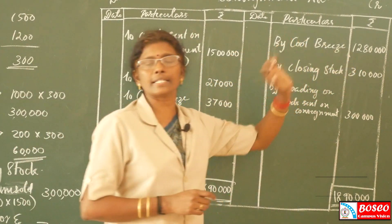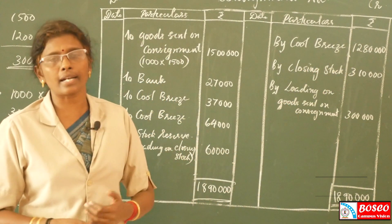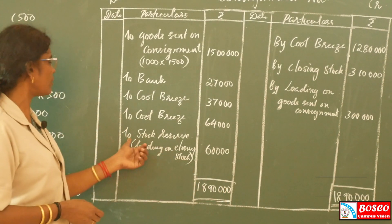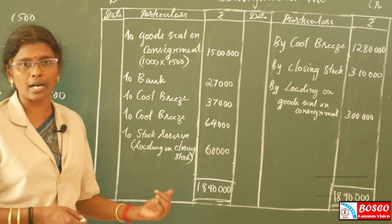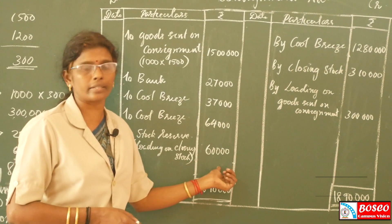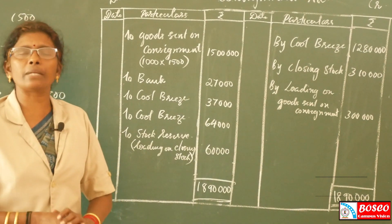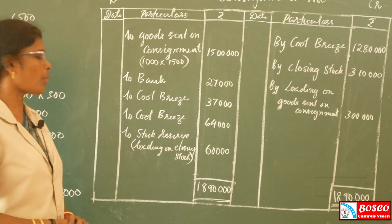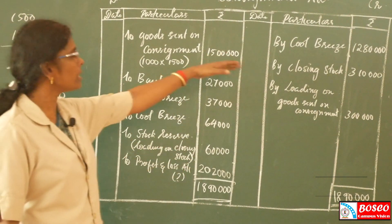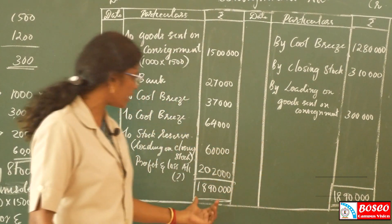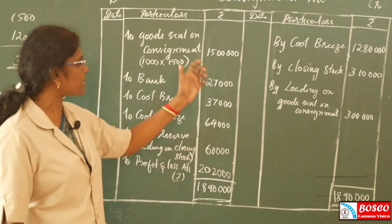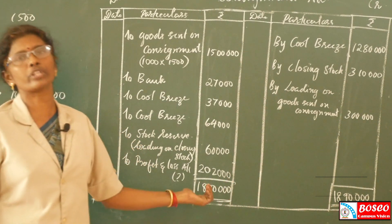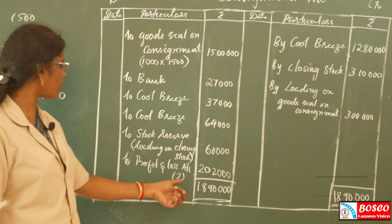Closing stock or consignment stock is on the credit side. The loaded price is on the debit side. To calculate loading on closing stock — the stock reserve — 200 into Rs.300 equals Rs.60,000. Now we need to balance the account. The difference between the debit side and credit side gives the profit on consignment, which is transferred to the profit and loss account. Journal entry: Consignment Account debited to Profit and Loss Account.